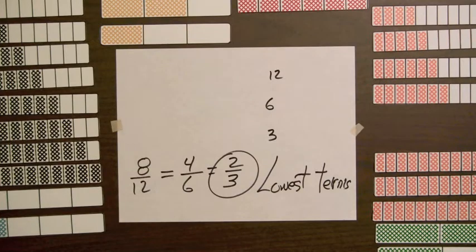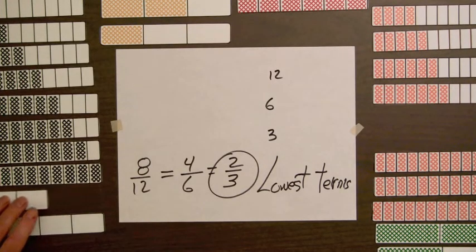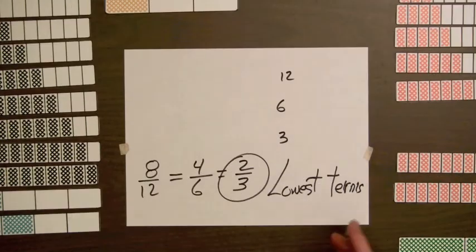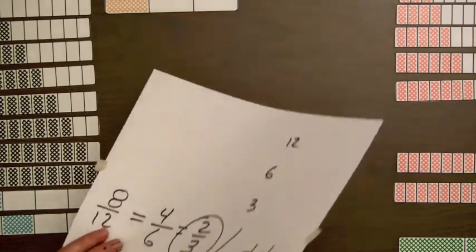For an activity with fraction bars, students can remove all the zero bars and all the whole bars, and select the remaining bars into two piles.